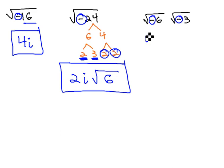Those negatives can each come out as an i. i root 6 times i root 3. Multiplying what's outside the radical, then, i times i is i squared.